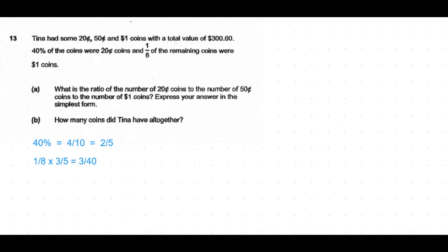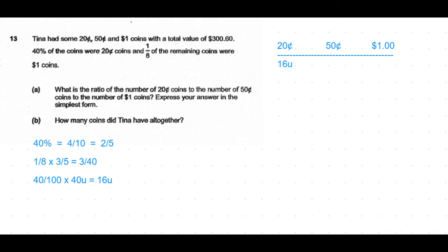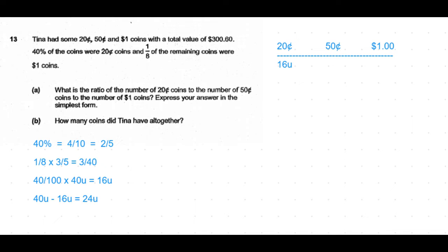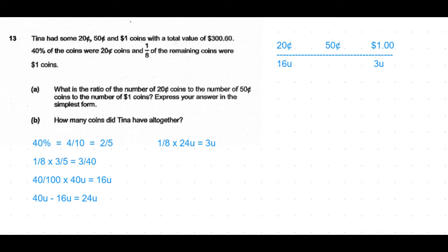First, 40% of the coins were 20 cent coins. That means 40/100 times 40 units is 16 units. So 20 cent coins are 16 units. Next is the remainder: 40 units minus 16 units is 24 units. Out of this 24 units, 1/8 of the remainder, so 1/8 of 24 units is 3 units—that's the one dollar coins. The remaining is 40 units minus 19 units, which is 21 units for the 50 cent coins.